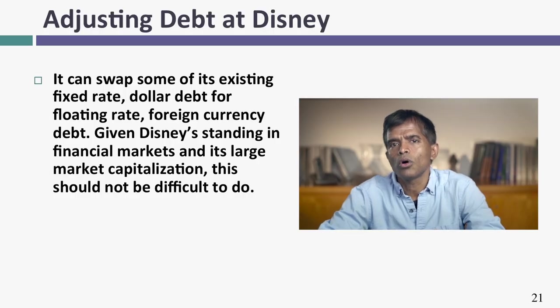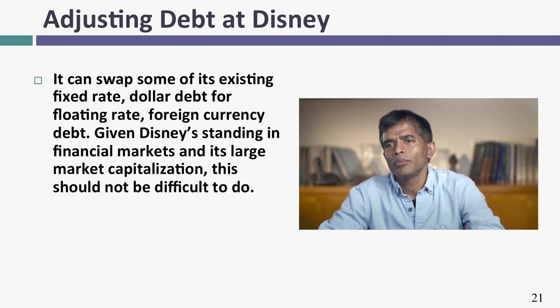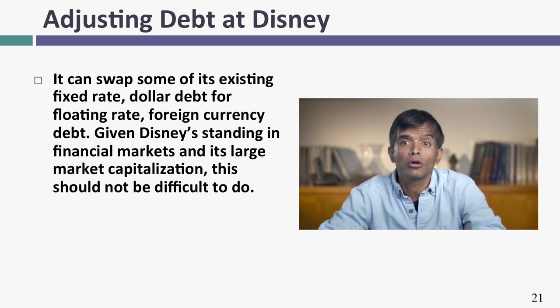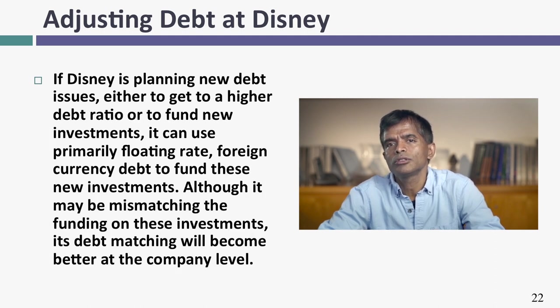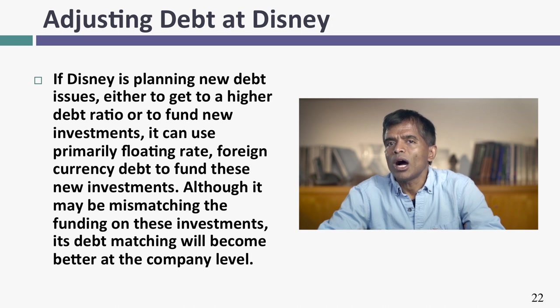So my overall conclusions looking at Disney's current debt: I'd probably prefer it to be a little more short-term, a lot more foreign currency, and a lot more floating rate. There are a couple of ways to fix that. One is to use swaps and derivatives right now — you might swap some US dollar fixed-rate debt for euro floating-rate debt and the problem will go away. The other way is Disney has a lot of investments planned in the next few years; if it funds these disproportionately with foreign currency floating-rate debt, this problem will go away as well. Either way, Disney can get to a debt that is right for it.